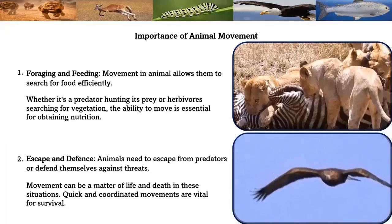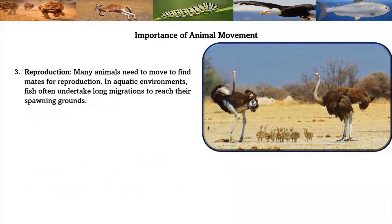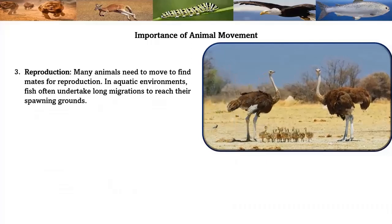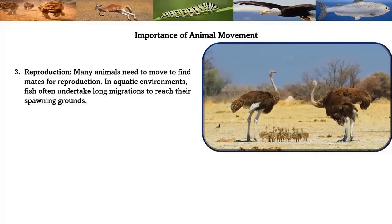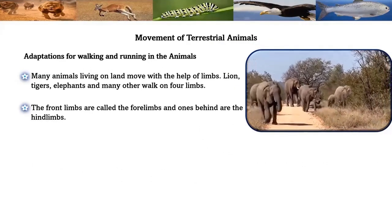Quick and coordinated movements are vital for survival. Reproduction: many animals need to move to find mates for reproduction. In aquatic environments, fish often undertake long migrations to reach their spawning grounds. Migration is a form of locomotion critical for many species — birds, fish, and even some mammals undertake seasonal migrations to find suitable breeding grounds. These journeys can be thousands of miles long and are crucial for species survival.